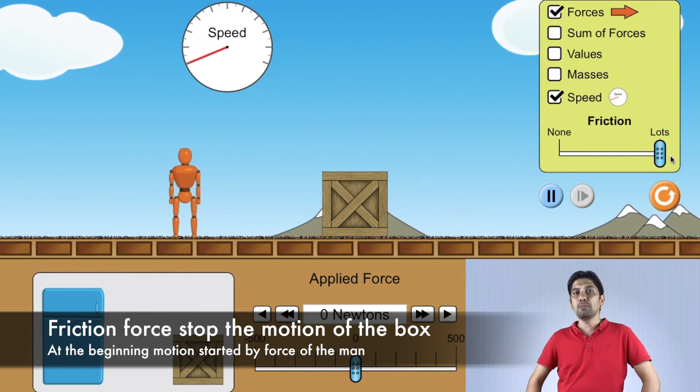Another important effect of unbalanced force is changing shape or size. This change can be elastic or inelastic, meaning permanent or temporary change.